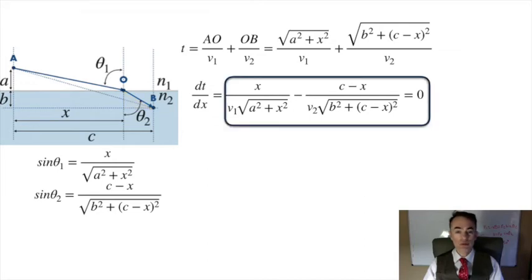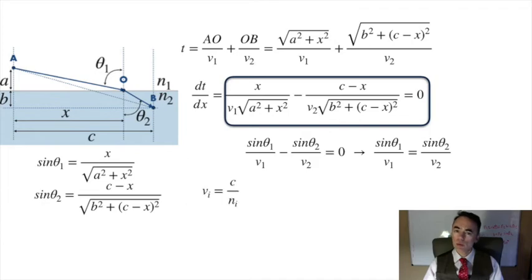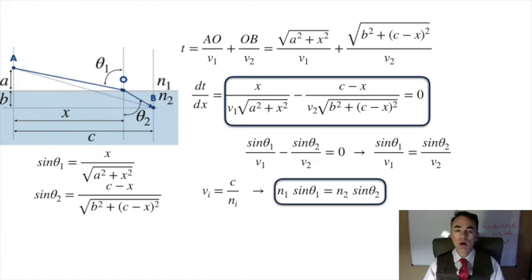This, back to the previous result, and we have this simple equation. If we replace the velocities v by c over the index of refraction n, then we get, precisely, Snell's law. Ain't that nice?